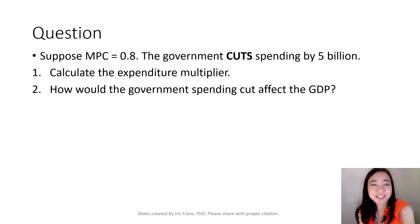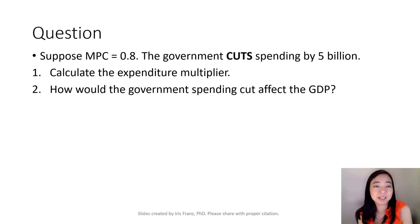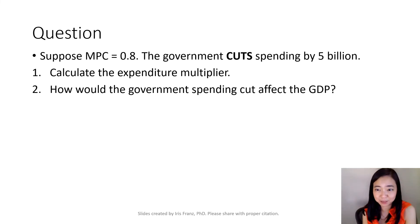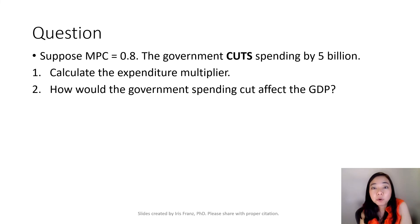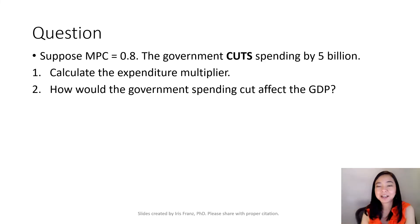Let's try another question. Suppose your MPC is equal to 0.8 and the government cut spending by $5 billion. Question 1: calculate the expenditure multiplier. Question 2: how would the government spending cut affect GDP? In particular, would the GDP go up or down, and by how much?